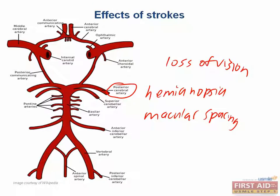A stroke in the basilar artery is very, very scary. This stroke leads to locked-in syndrome. It will take out the pons, the medulla, the lower midbrain, the corticospinal tract, the corticobulbar tracts, as well as the PPRF. It's no wonder, then, that a lesion there leads to locked-in syndrome. The patient is unable to move. It's not a coma, however, because they retain consciousness, and they can communicate through blinking.